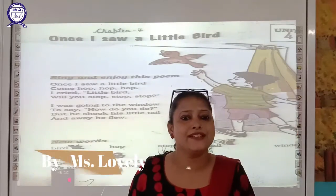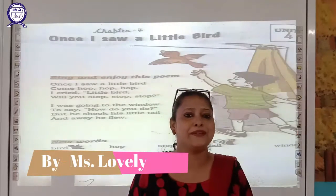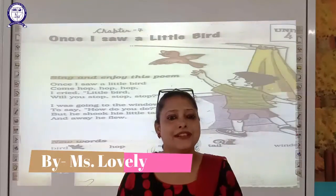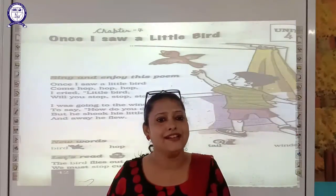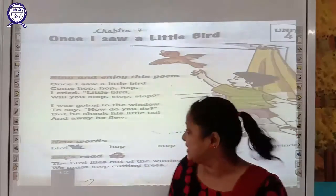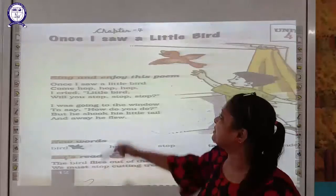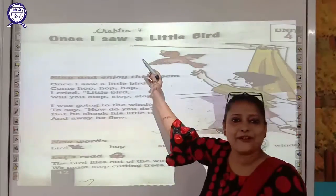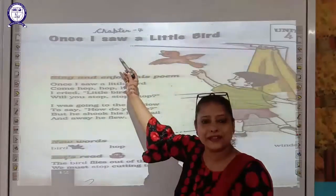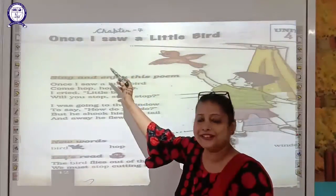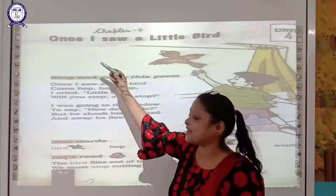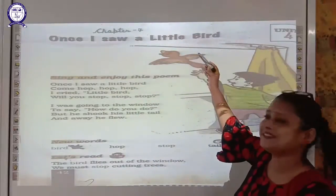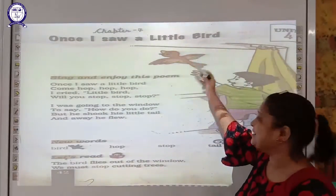Welcome back to online classes of 3D Memorial Seeders campus schools. Hello students, how are you? Hope you are fine. Today we will do chapter number 7 of English NCRT Marigold class 1, and the title of the chapter is 'Once I Saw a Little Bird.'